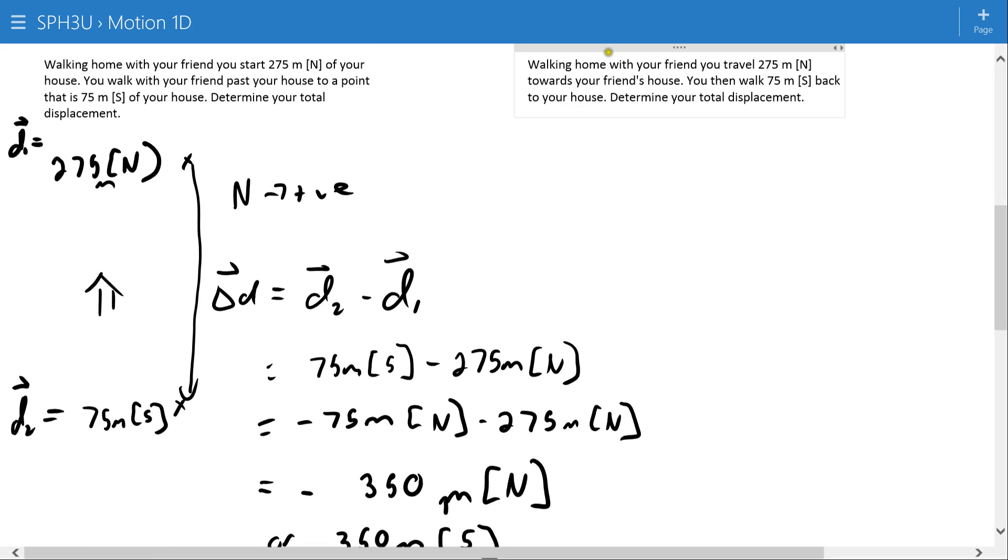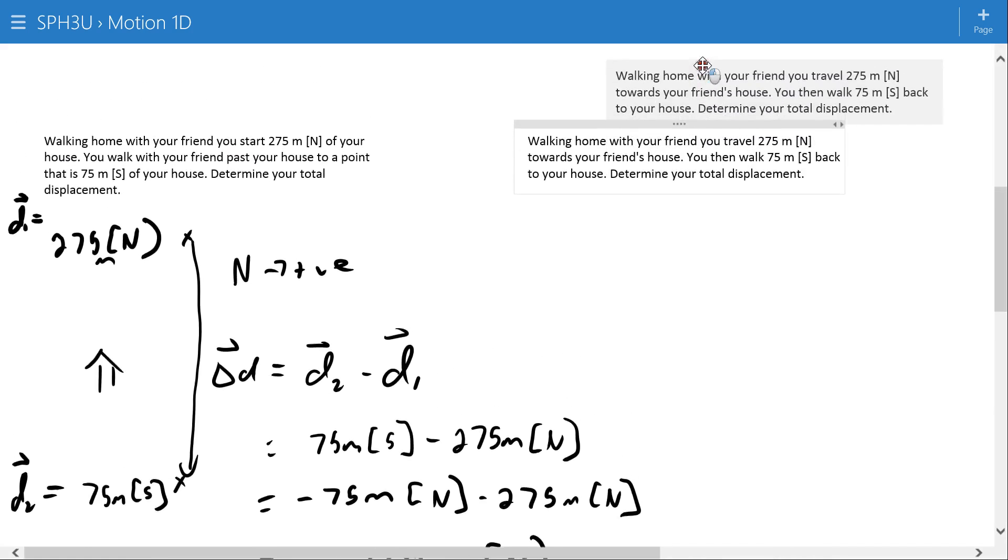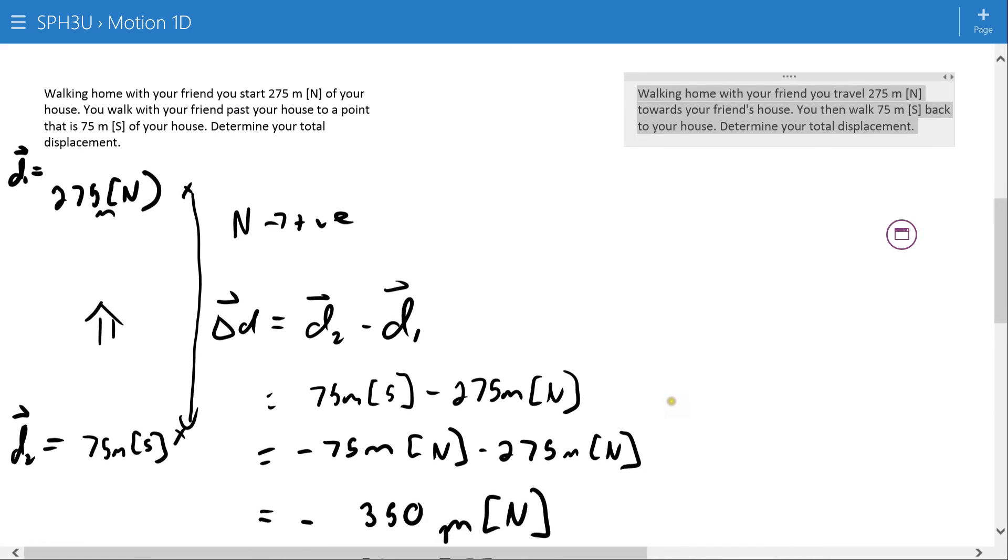Alternatively, let's look at another example here. It's almost the exact same, but not quite the exact same, and that's why it's a little misleading. Walking home with your friend, you travel 275 meters north towards your friend's house, then you walk 75 meters back to your house.